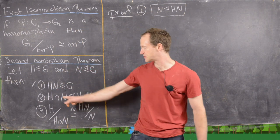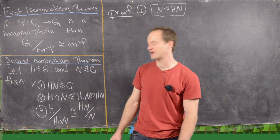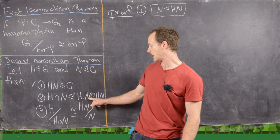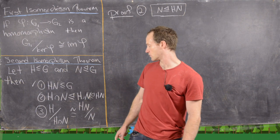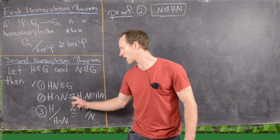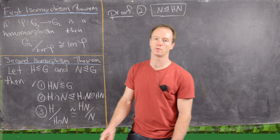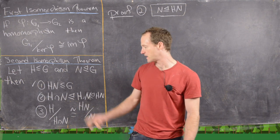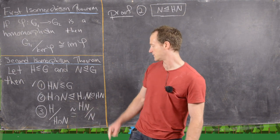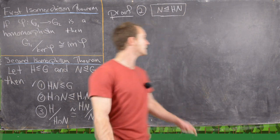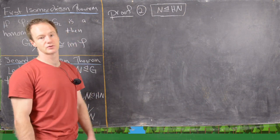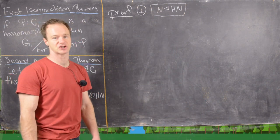Moving on to part two: we need to show that H∩N is a normal subgroup of H, and that N is a normal subgroup of HN. We won't prove the first part now — we'll see that it follows for free from the proof of part three. We'll focus on proving that N is a normal subgroup of HN.